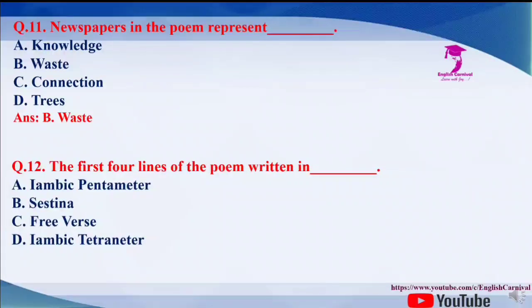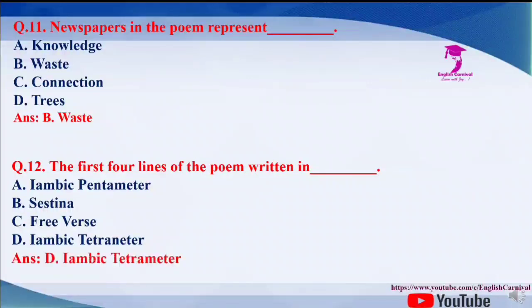Question number 12: the first four lines of the poem are written in dash. The options are A. Iambic pentameter, B. Sestina, C. Free verse, and D. Iambic tetrameter. The correct answer of this question is D, that is iambic tetrameter.